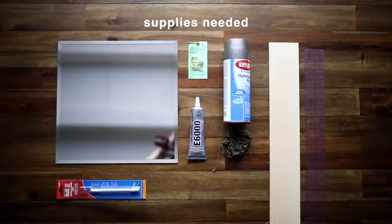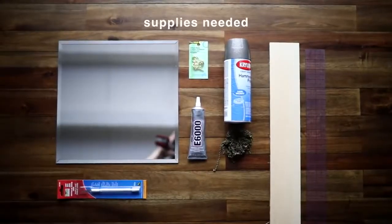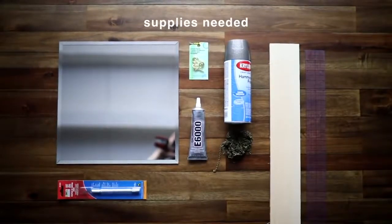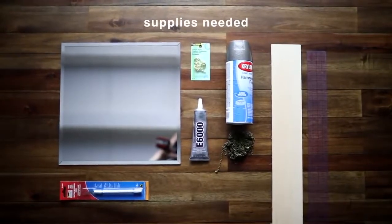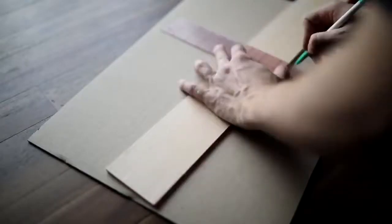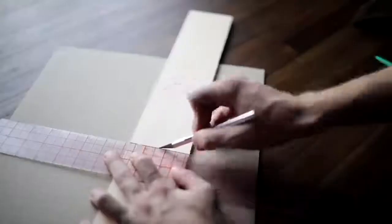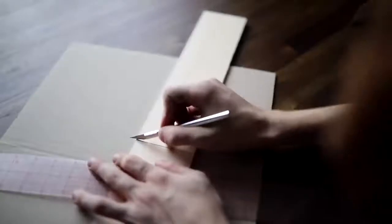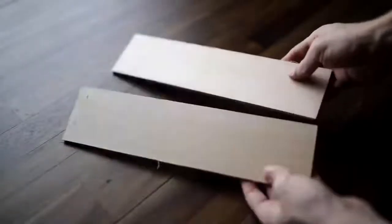For the hanging mirror DIY, you're going to need a square mirror, some E6000, an Exacto knife, some chain, spray paint of choice, a piece of wood, ruler, and some of those screw hooks. What you're going to start off by doing is taking a small piece of wood and cutting it down to 12 inches in width.